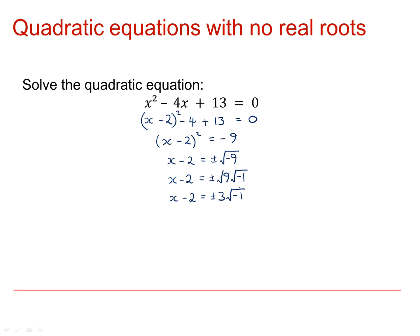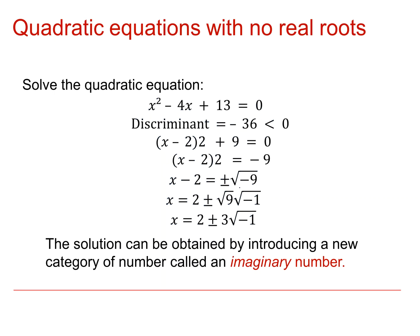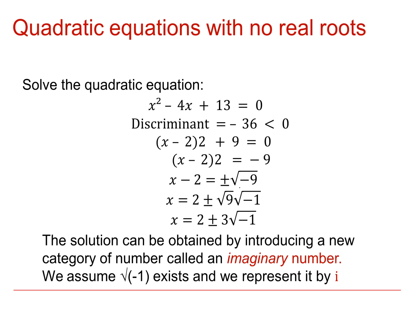So what do we do from here? Well, we're going to make up a new number. The solution can be obtained by making up a number for the square root of minus 1. We're going to assume that it does exist and we're going to call it i. i for imaginary.